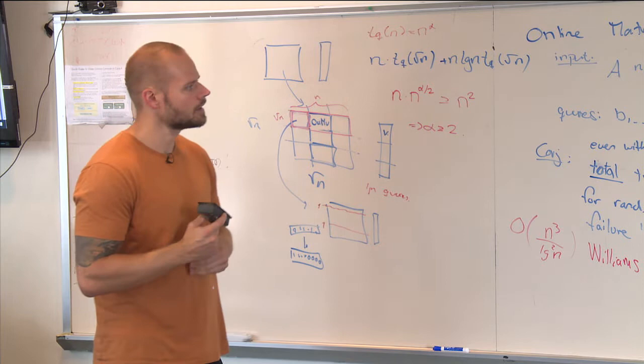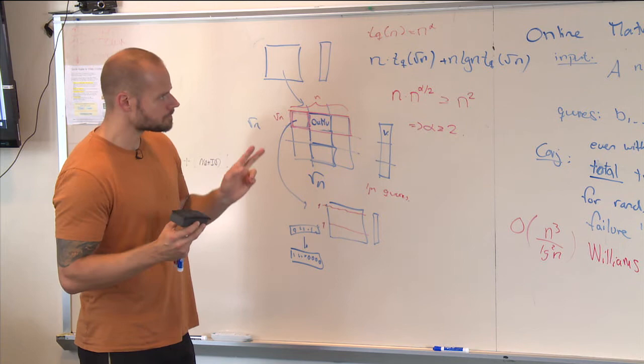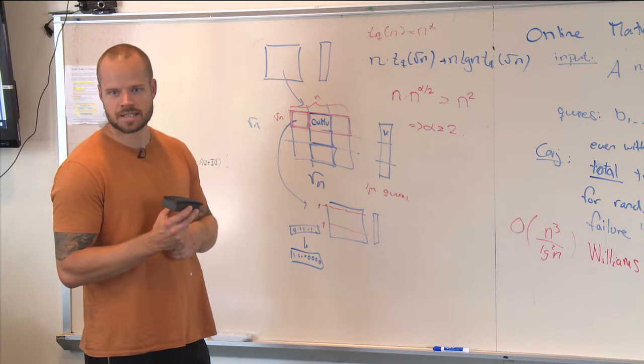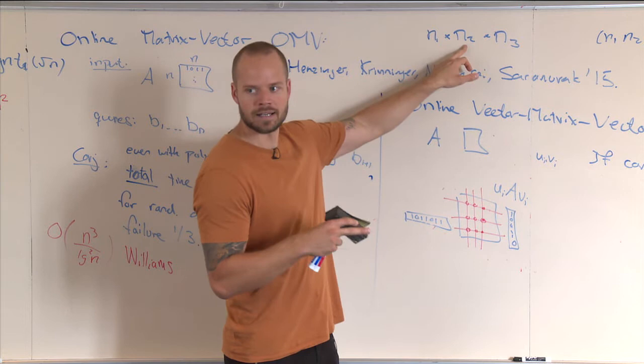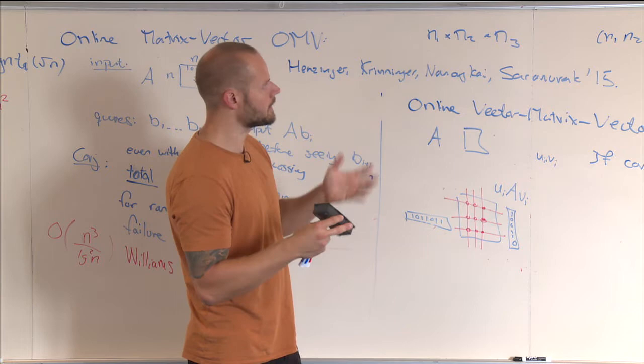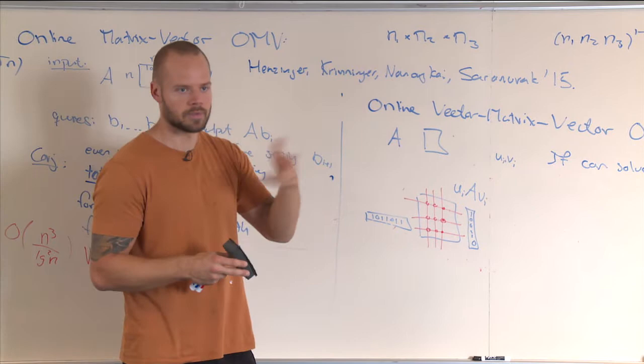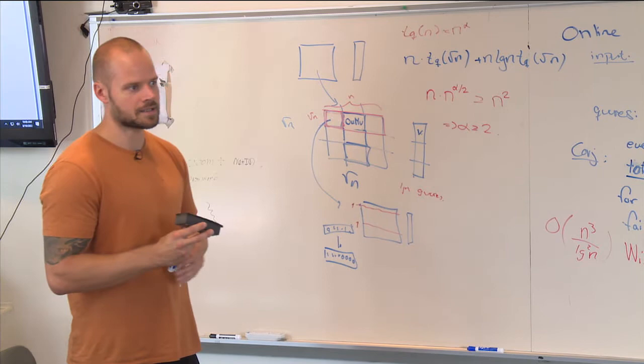One quick remark: the online mixed spectrum multiplication also implies the multiphase conjecture — that this problem is hard. You need this N1 by N2 by N3 version, where you let N1 be K, the number of sets you get in the beginning, N2 is N the length of the sets. If you have a multiphase data structure, you can do all N3 updates one at a time and ask the queries. So it also implies the multiphase conjecture with the strongest possible parameters — that you cannot do anything non-trivial there.